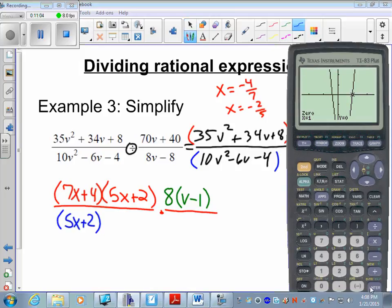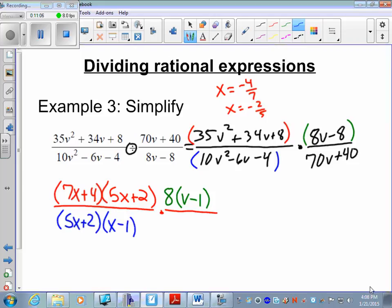The next denominator, 70v plus 40, I can factor out 10 and I'm left with 7v plus 4.